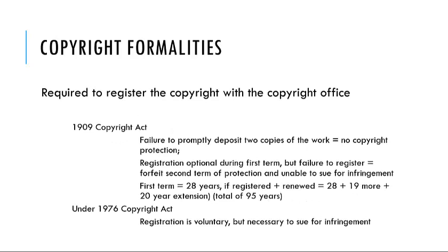The next requirement or formality was that you had to register the copyright with the Copyright Office. Under the 1909 Copyright Act, failure to promptly deposit two copies of the work could forfeit your copyright protection. Copyright registration itself was optional during the first term of protection, but failure to register meant that you would forfeit the second term of protection and you were unable to sue for infringement. The first term was 28 years, so if you weren't registered, you would only get the 28 years of protection.